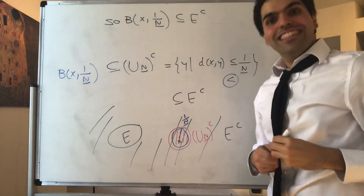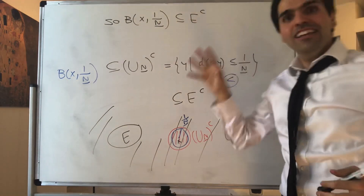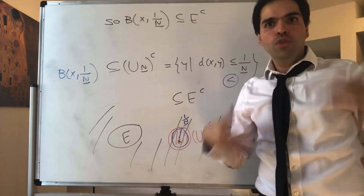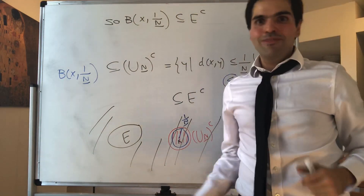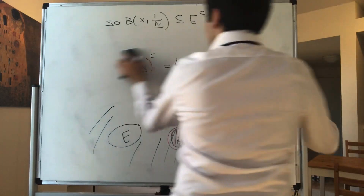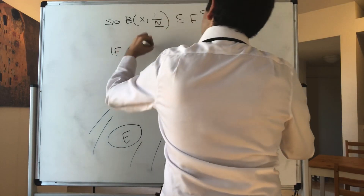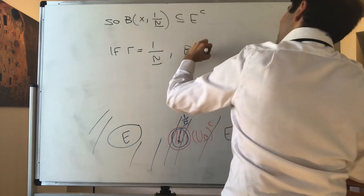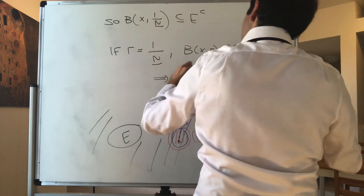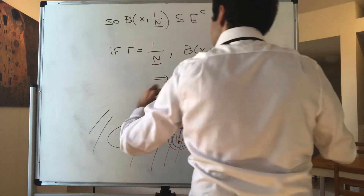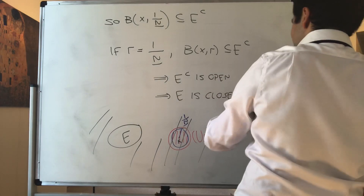Wait — that's exactly what we wanted. We wanted a ball centered at X with some radius that is included in E complement. I told you you'd be confused, but when you see it you should be happy — now it's your time to be happy because we're done with the proof. So if R is just 1 over capital N, then B(X, R) is included in E complement. So E complement is open, so E is closed.